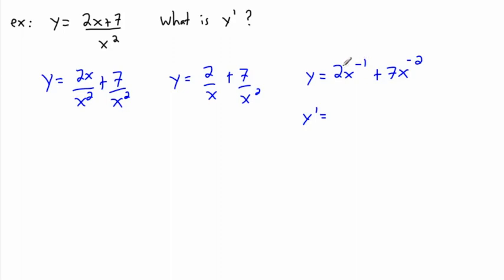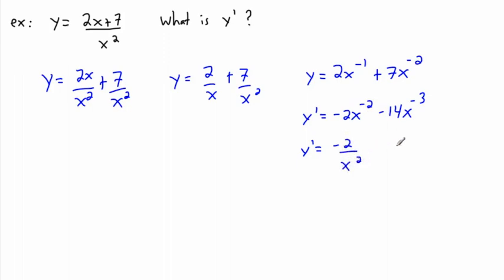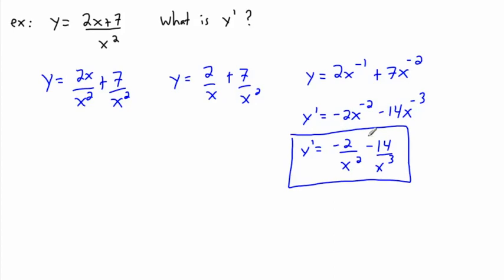Using the trick: negative 1 times 2 gives negative 2, times x to the power of negative 2 — that's one less than negative 1. Then negative 2 times 7 is negative 14, times x to the power of negative 3. Now I'm done; I just pretty it up. Negative 2 stays on top, and x to the power of negative 2 becomes 1 over x squared. Then minus 14 divided by x cubed — since x to the negative 3 equals 1 over x cubed. So that is the derivative.